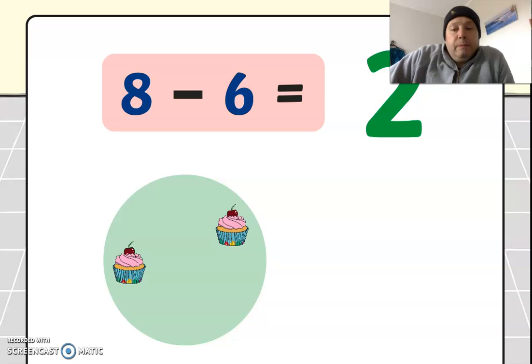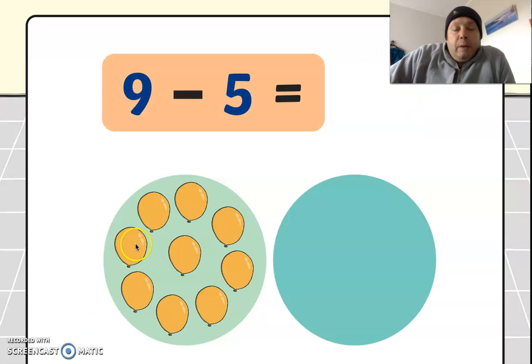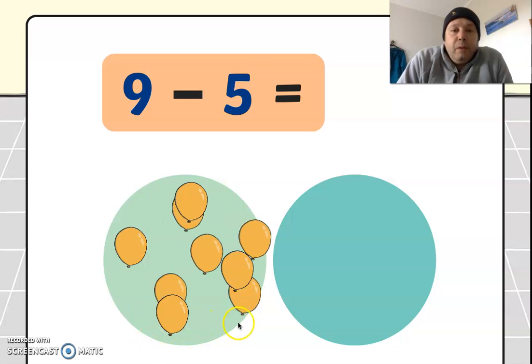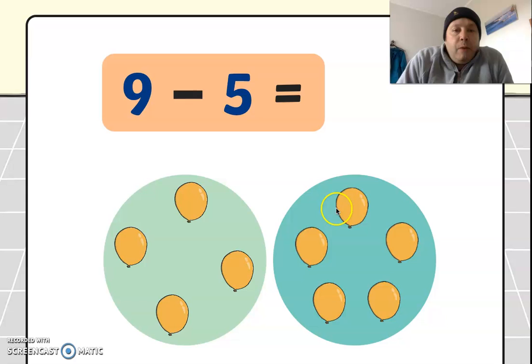Here we go, nine balloons, one, two, three, four, five, six, seven, eight, nine. And it's asking us to take away five balloons, so we've got five over here now, one, two, three, four, five, and how many is left? One, two, three, four, four balloons, well done.